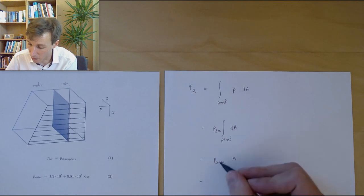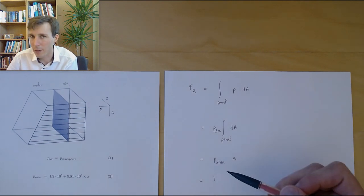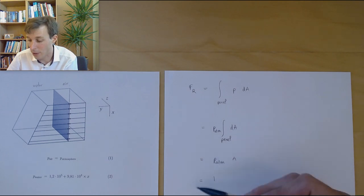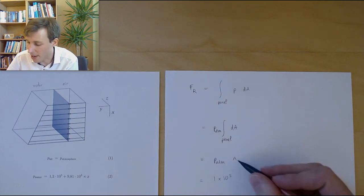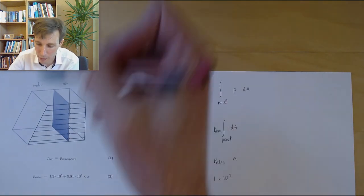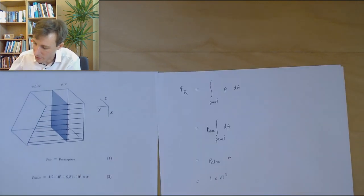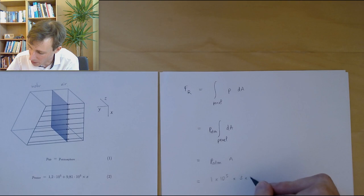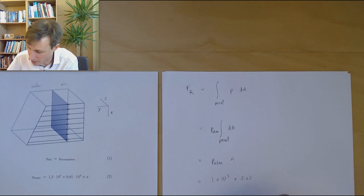Now it's just a matter of putting the right numbers in. P_atmosphere is one bar, but be careful — one bar is not SI units. We need to convert to Pascals: one bar is 10 to the power of 5 Pascals. The area is three meters by three meters, so nine square meters. The units work out as Pascals times meters squared giving Newtons. So the result is 9 times 10 to the power of 5 Newtons — that is the force on the right side.